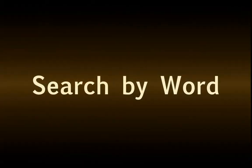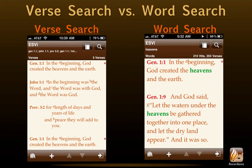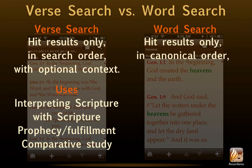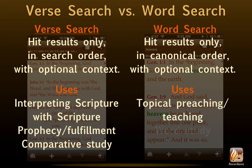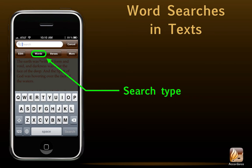Search by word. A word or phrase search display is different from a verse search. As you can see, the word hits are identified in a different font color. A word or phrase search shows hit results only in canonical order, again with optional context. Uses include things like topical preaching or teaching, word study, and thematic study. By now, this search screen for text should look very familiar. The only difference is that we choose words instead of verses. So let's take a moment to look at the choices under More.